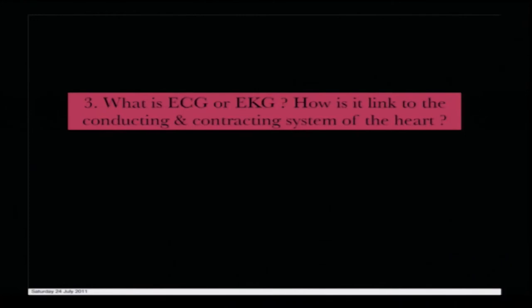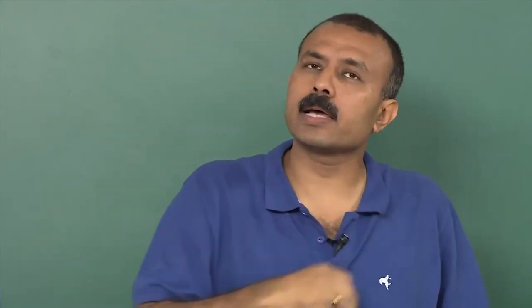Now comes the question: what is ECG or EKG and how is it linked with the conducting and contractile system of the heart? We will close this lecture here, and in the next lecture we will start from there. To summarize: we have covered the anatomy of the heart, the different cell types, the two distinct electrical elements — the contractile system and the conductive system — where the conducting system is the master and the contractile system is the slave, and we have made a comparison between the electrical properties of both. Thank you.